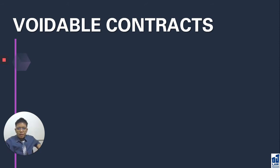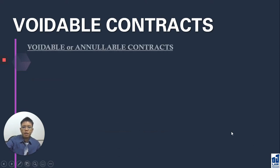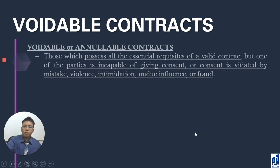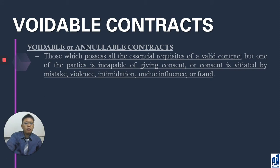In case of avoidable contracts or annullable contracts, it is defined by law as a valid contract. Why is it a valid contract? Because it possesses all the essential requisites. In avoidable contracts, there is cause, there is also object, and there is consent. However, it is also defective.